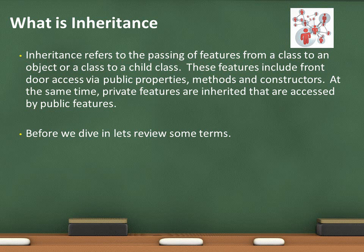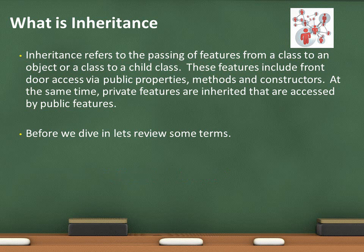When you declare a variable in an application, that variable is automatically private — it's assumed private. You can put the word private in front of it, like private int myInt, but you don't have to. Under most situations, you don't make variables public; that's not the way you communicate to a class. You would typically pass information to and from classes with one or more uses of either properties, constructors, or methods.